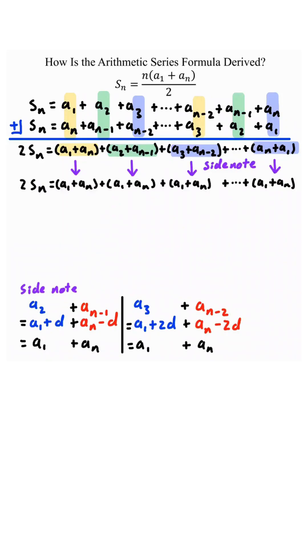So in the end, by using our side note, we have 2s of n equal to a sub 1 plus a sub n, plus a sub 1 plus a sub n, plus a sub 1 plus a sub n, and so on all the way down to a sub 1 plus a sub n.